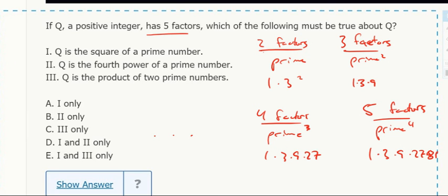Okay, so which of these must be true? The square of a prime, we know it's not that. The fourth power of a prime, yeah, that's what we were saying. The product of two primes, not that.